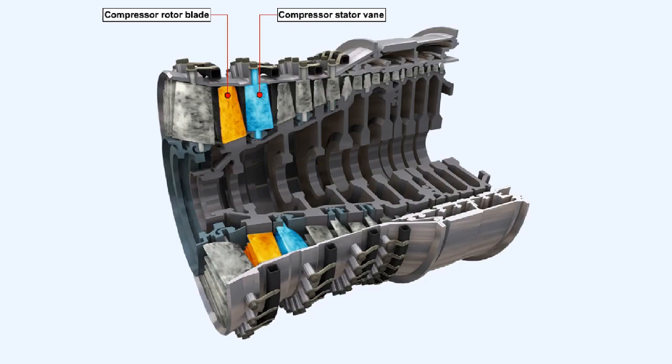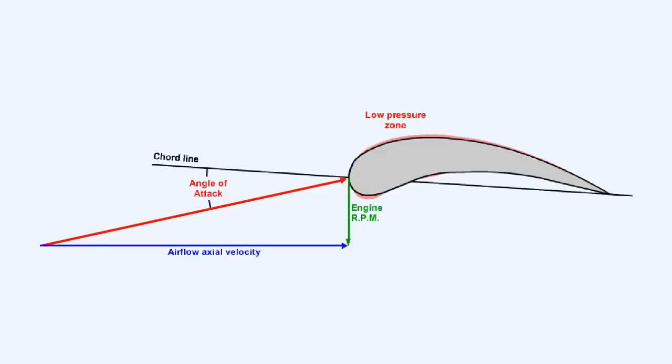Accumulation of contaminants in both the compressor and the turbine section of the engine reduces the efficiency of the unit. The contaminants in the compressor, which are mostly salt and pollution from industrial areas, reduce the aerodynamic efficiency of the blades, which increases the airflow axial velocity, lowering the angle of attack over the blade as shown in this diagram.